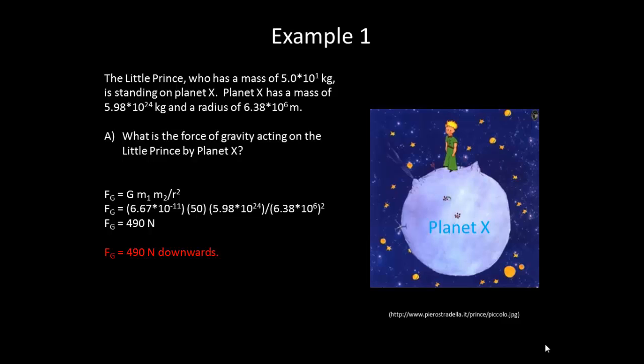Note that we just plugged in the radius of planet X as our distance from the center of the little prince and planet X. Why didn't we have to worry about the height of the little prince, or try to make it to the center of his mass? Well, if you think about it, the size of the planet is very large, so the small addition of his height, or the distance to his center of mass, would be very small compared to that total distance.